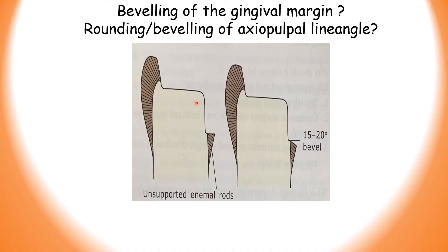Another popular question: why is the gingival margin beveled? In the gingival seat area of the class 2 cavity, the enamel rods are apically oriented — directed downwards — and are unsupported. Your answer: the gingival seat is beveled at 15 to 20 degrees to remove unsupported enamel due to the apical orientation of the enamel rods, so that the enamel does not fracture under occlusal loading.